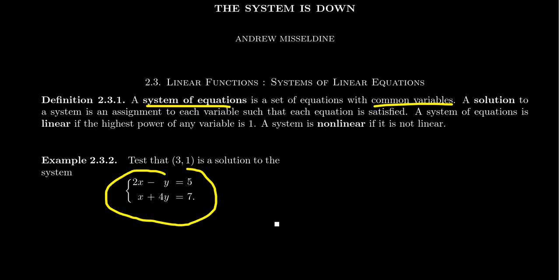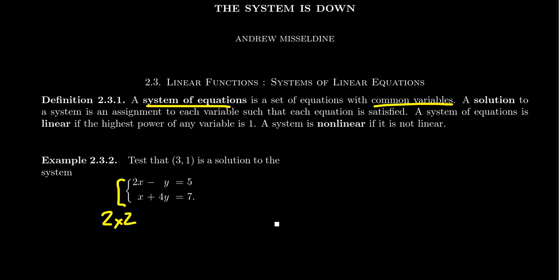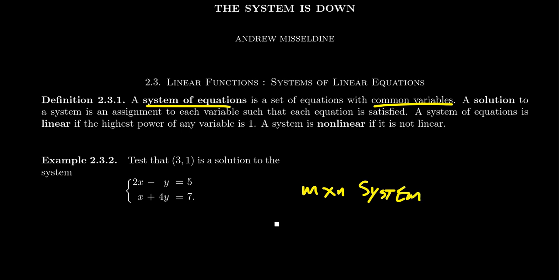You can see an example right here. This is a two by two system of linear equations. It has two equations: 2x minus y equals 5, and x plus 4y equals 7 — and two variables, x and y. You describe a system as two by two to suggest there are two equations and two variables. You always mention the number of equations first, then the number of variables second. So an M by N system would have M equations and N variables.